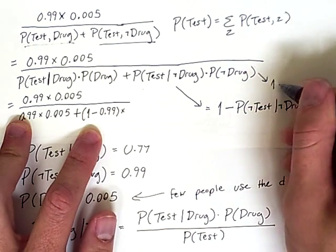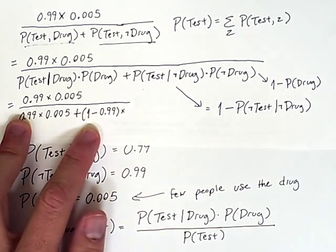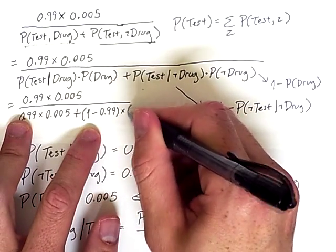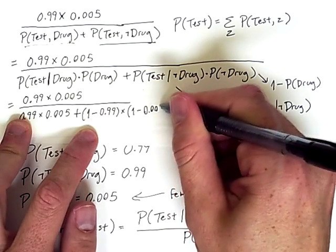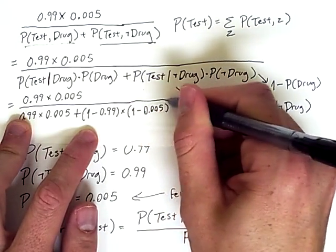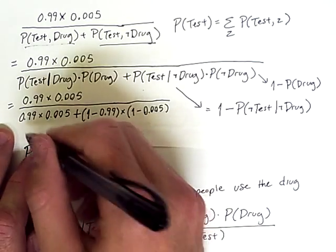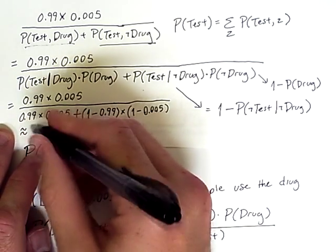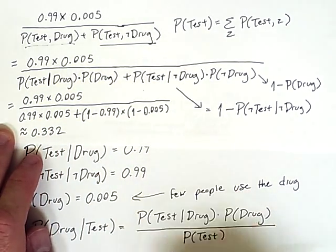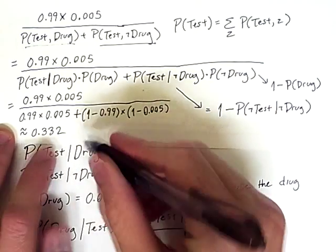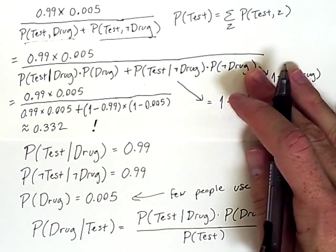That's 1 minus the probability of being a user of that drug, and we can calculate that too. So that's 1 minus this 0.005. And if you carry out all of these calculations, then the answer you get is approximately equal to 0.332, which is fairly shocking and also has important consequences.